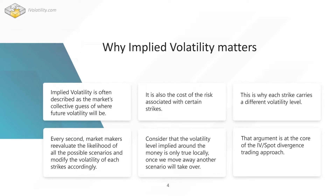I want to spend a minute on why implied volatility matters, because people often oppose implied vol, options, and spot. In my opinion, they're all part of the same equation. An option is a way to express a directional view just as a future or a stock would be. There is a very strong mechanical relationship between spot and volatility, so you cannot ignore volatility — people trading options will have an impact on spot as well.